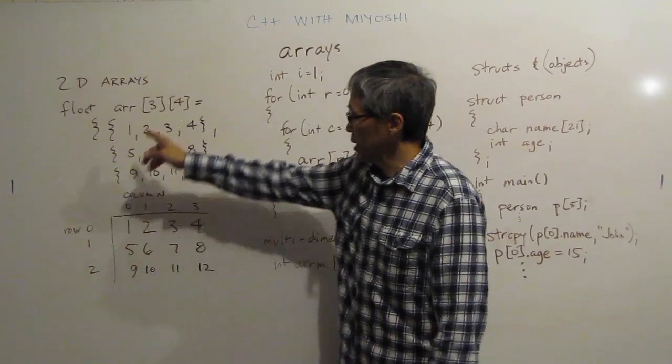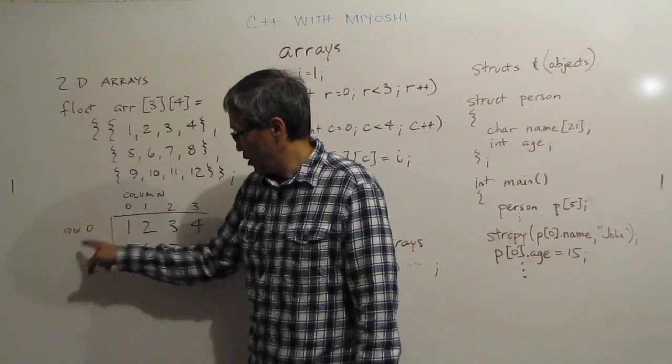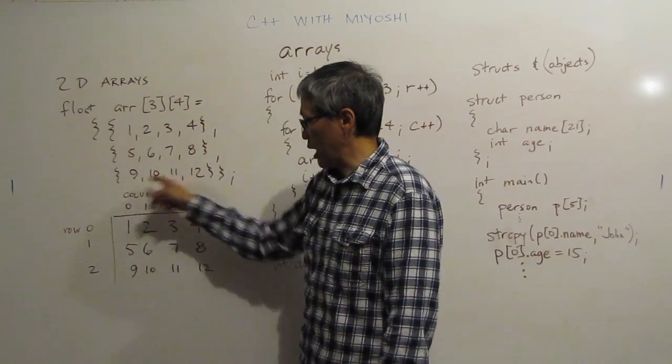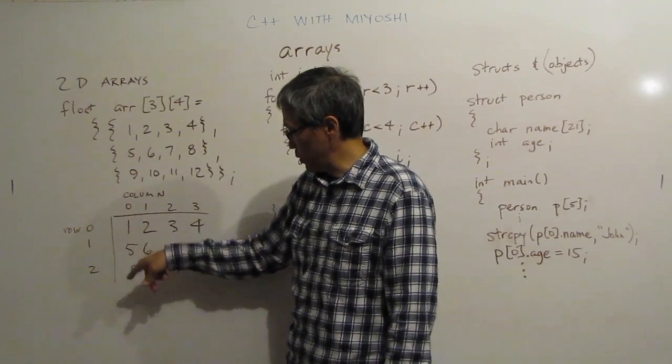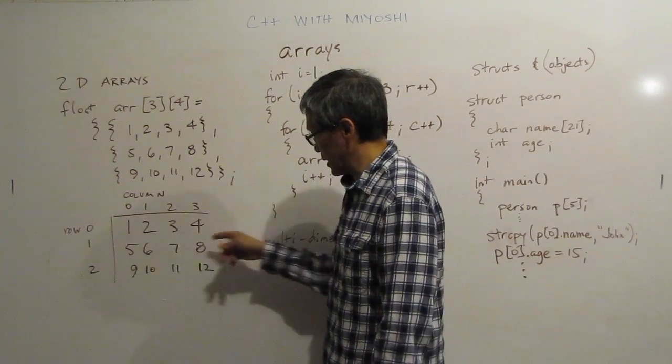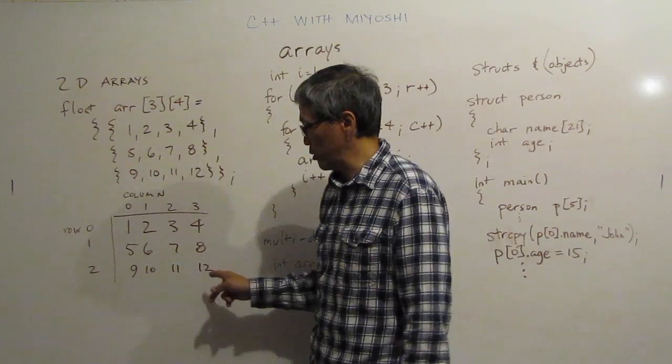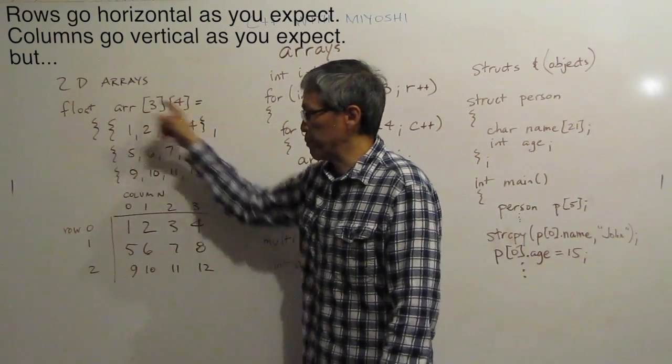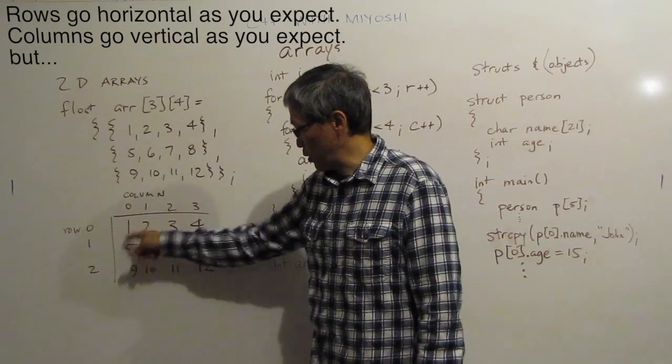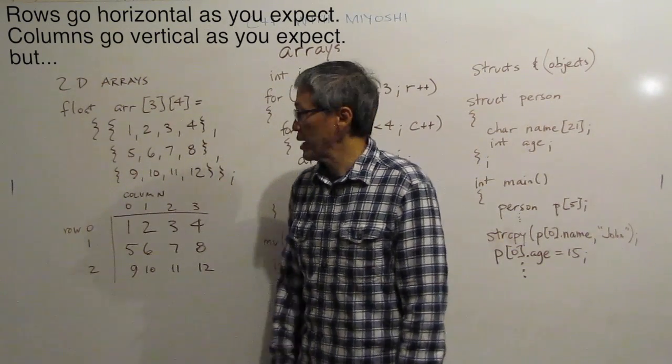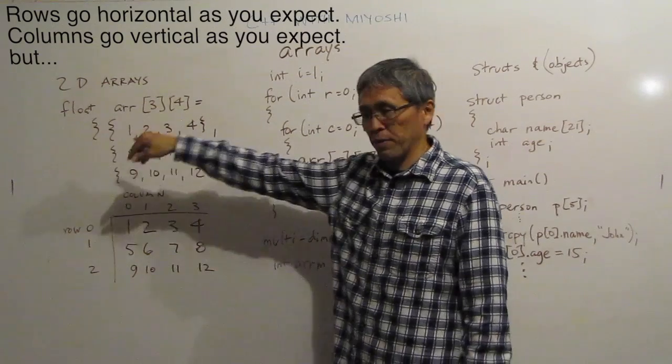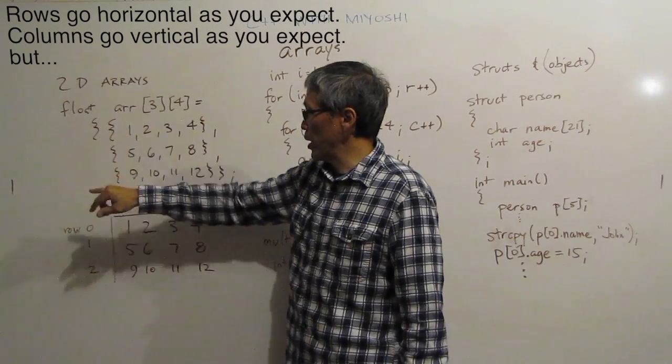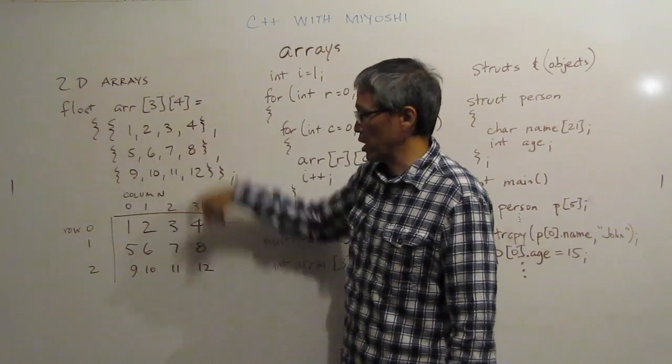What this does is it makes an array that's got three rows and four columns. So I have row zero, row one, row two. These guys here, zero, zero, row one, row two. And columns zero, one, two, and three. Notice that I set this up to look just like it would in my array down here.